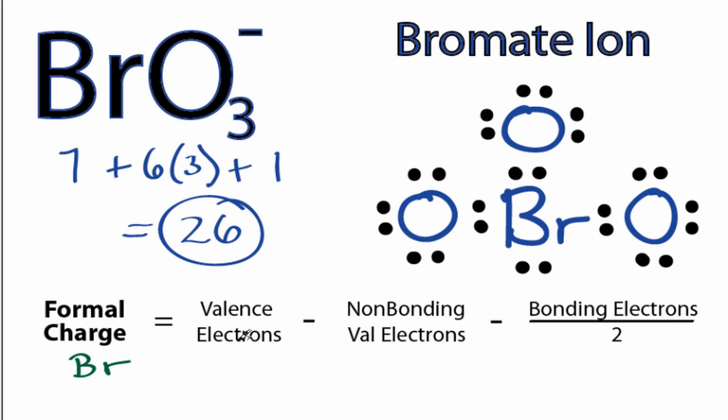For Bromine, we have 7 valence electrons from the periodic table, minus the nonbonding, these two right here, minus the bonding. We have 2, 4, and 6. 6 divided by 2. That gives us a plus 2 formal charge on the Bromine.